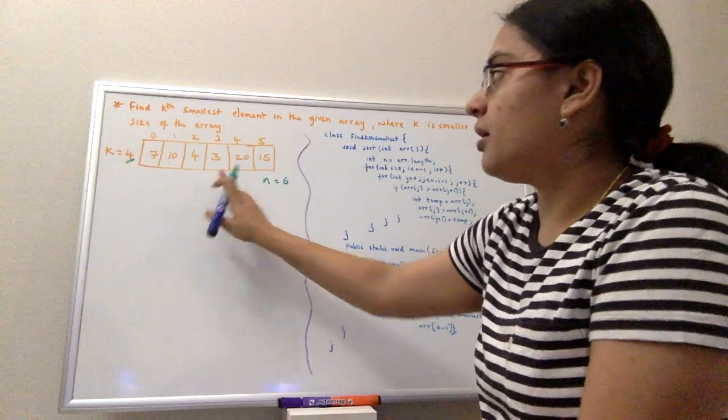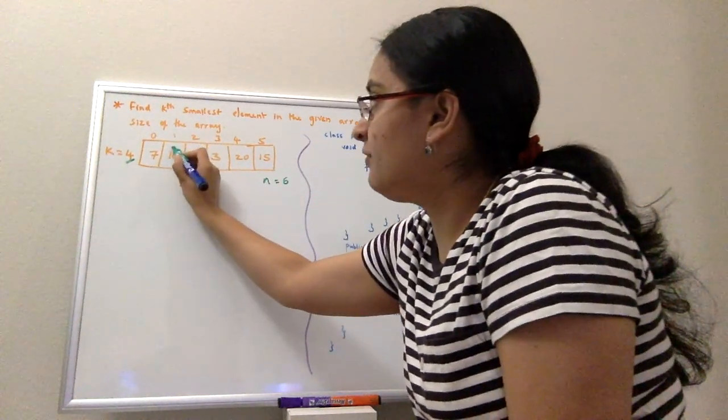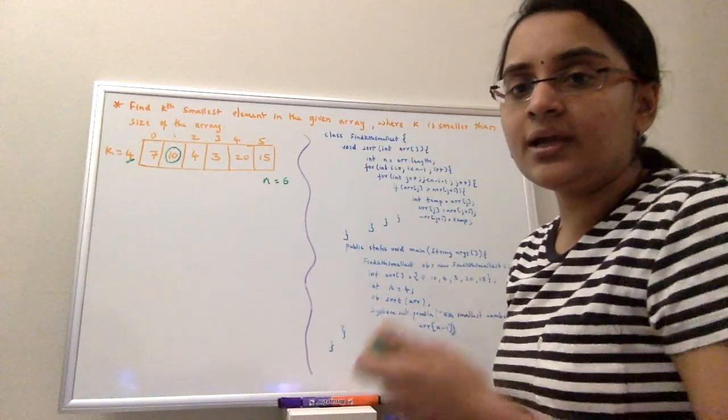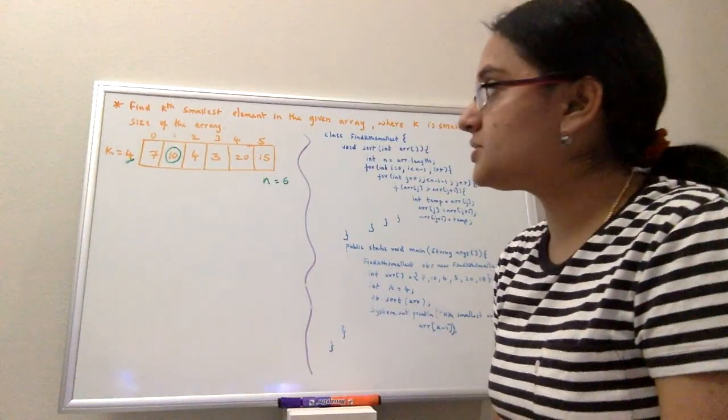When I look at the array, I see 10 as my fourth smallest element. But how did I get to this conclusion that 10 is my fourth smallest element?